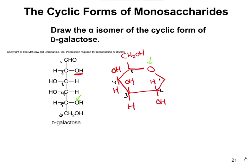Carbon 1 is that anomeric carbon. The OH can be up or down — more specifically, it's an anomer. Since the problem says draw the alpha isomer, alpha means the OH is going to be down, and the H goes up. If it said to draw the beta form, you would draw the exact same thing except flip-flop that H and OH. Alpha means OH is down; beta means OH is up.